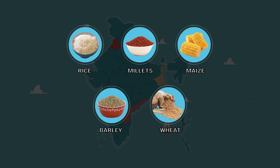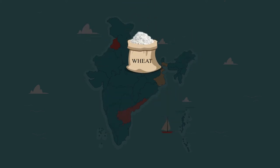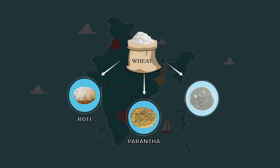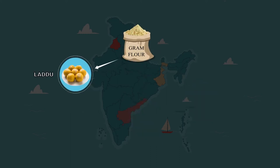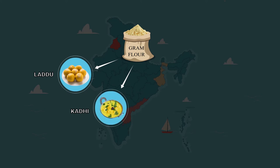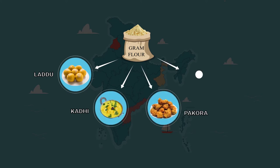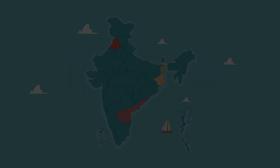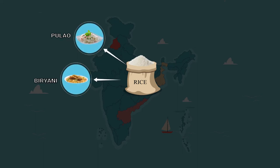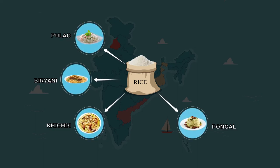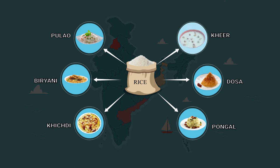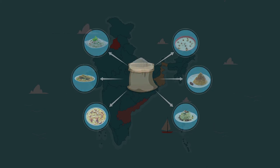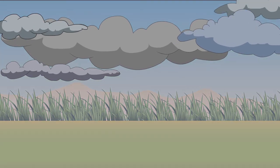The same ingredient can be used for making a variety of dishes. For example, wheat is used in making rotis, parathas, and halwa. Gram flour is the basic ingredient in laddoos, kadi, pakodas, and halwa. Rice is used for cooking pulao, biryani, khichdi, pongal, dosa, kheer, etc.